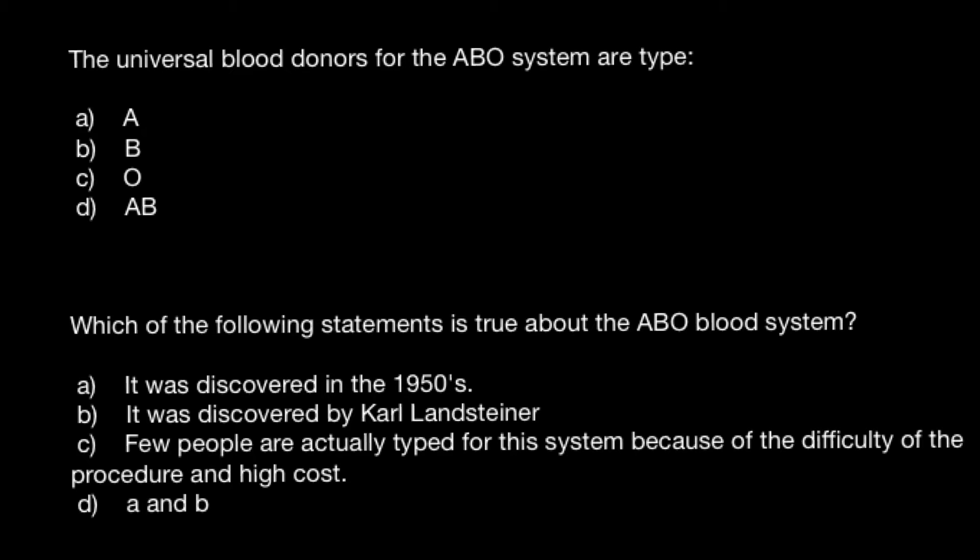Here is the first question: the universal blood donors for the ABO blood group system are — and here are four answers to choose from. If you're still confused which answer to choose, here is my explanation.